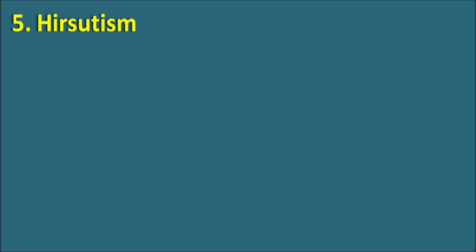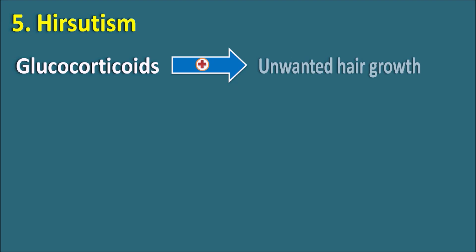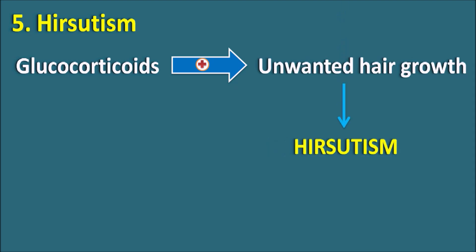The fifth side effect is hirsutism. These drugs can increase unwanted hair growth, resulting in hirsutism. They can also affect the thickness of the skin, producing thinning of the skin and unwanted hair growth. All these are related to the side effects of glucocorticoids.